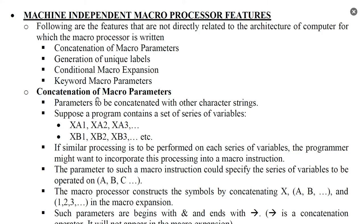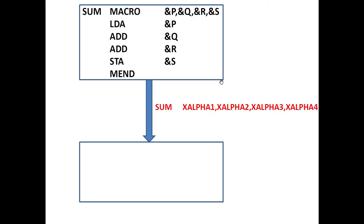The first feature is concatenation of macro parameters. For example, the macro definition is: macro name SUM with parameters &P, &Q, &R, &S — four parameters. The instructions are: LDA &P, ADD &Q, ADD &R, STA &S, and MEND. The macro call is: SUM X_ALPHA1, X_ALPHA2, X_ALPHA3, X_ALPHA4.